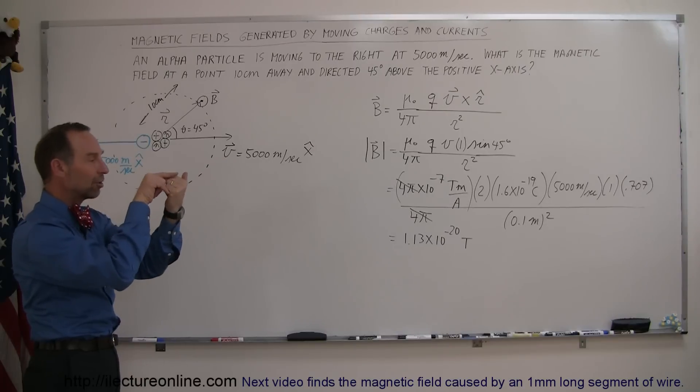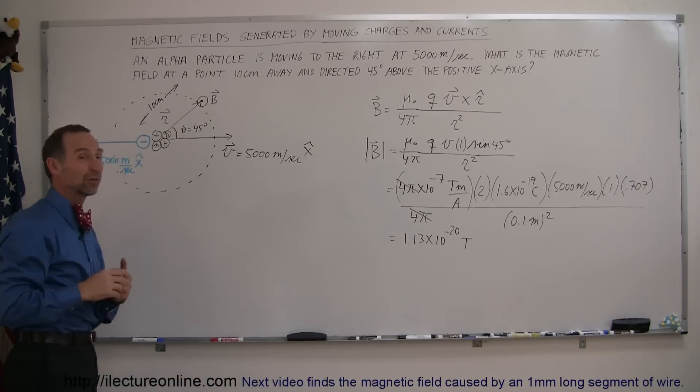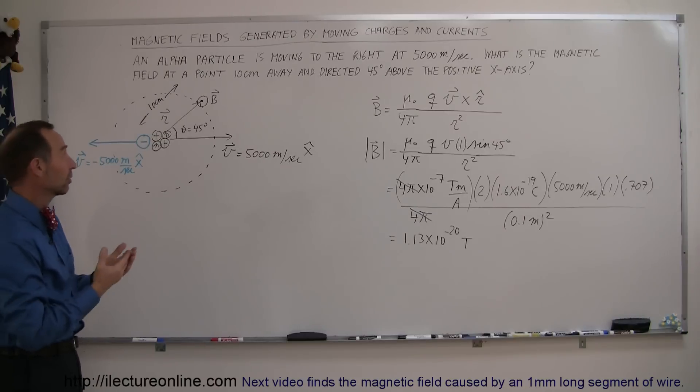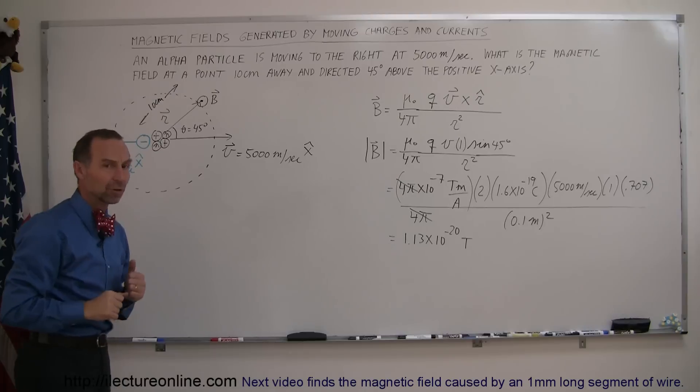At the very moment that they're at the same location what is now the magnetic field in this direction, so now it's going to be an addition, a vector addition of the magnetic field caused by the alpha particle and the magnetic field caused by the electron moving the opposite direction.